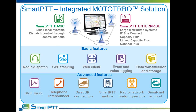SmartPTT connects to MotoTURBO networks directly via IP, including Capacity Plus and Linked Capacity Plus over NAI for both voice and data transmission. Capacity Plus networks can also be monitored and logged via IP connection without NAI, but in this case, to have the ability to send data into the network and make calls, control stations are needed. Also, SmartPTT gives a set of software tools such as web client and file transfer software, which increase radio network usability and functionality. SmartPTT also has functionality that allows it to connect to a PBX and gives subscribers the ability to use PBX interconnection from the radio network as well.